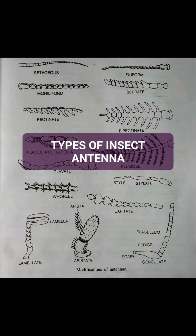Antenna of insect has several functions like hearing, sound production, and mainly it is organ of smell and taste.